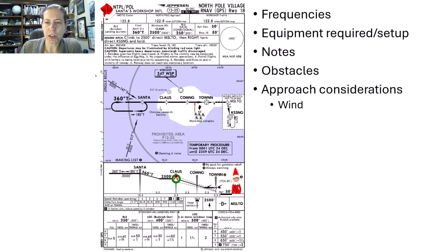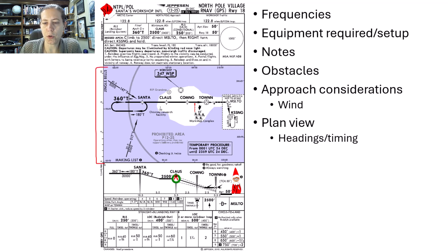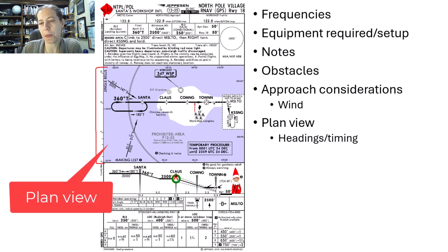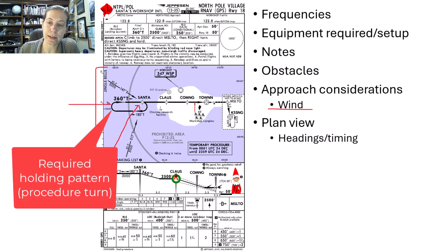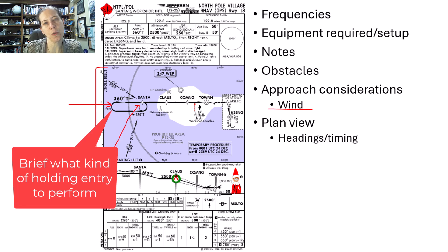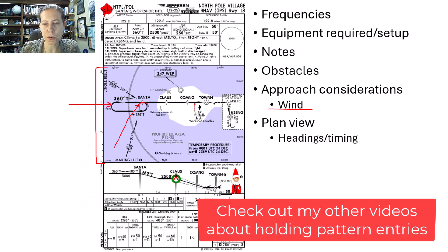The next area I'm going to look at is the plan view, which is the nice overhead view of the approach. That tells me the headings I'm going to fly, and I'll think again about wind correction. If timing is required, I'll think about that too, and I'll do a mini brief of the headings I expect to fly. For example, if I were approaching from the southwest, there's a holding pattern depicted as the procedure turn — it's not optional here. I'd think about my holding pattern entry. From this direction, I would probably want to do a direct hold.